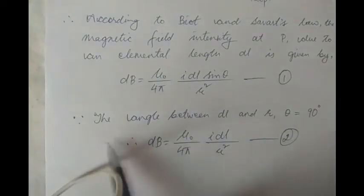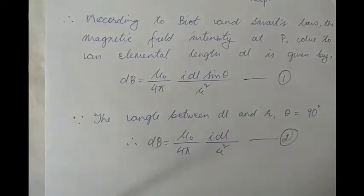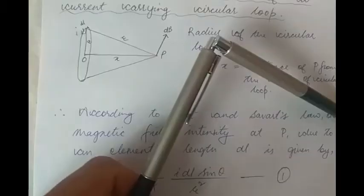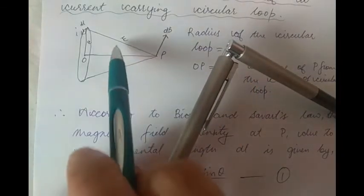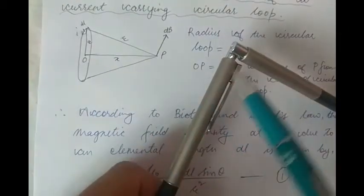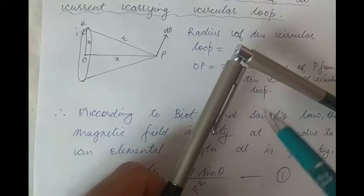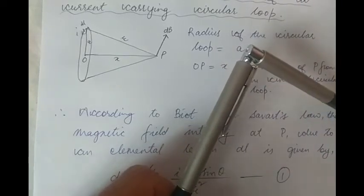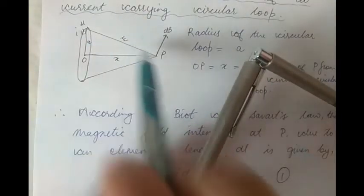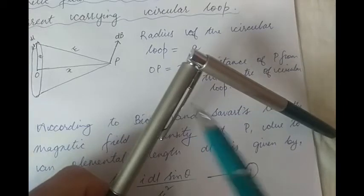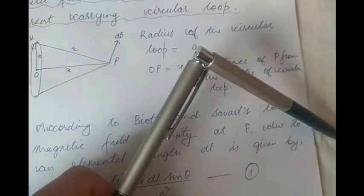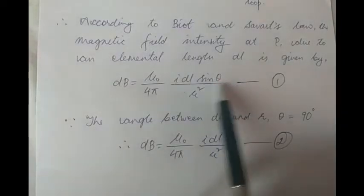The angle between DL and R — that is, theta — happens to be 90 degrees. For example, this pen represents your current element IDL, and this pen represents R. Theta is the angle between DL and R. As you can see, R is inclined, so this angle is 90 degrees. Since theta is 90 degrees, sine of theta becomes 1. Thereby, dB = μ₀/4π · I DL / R².